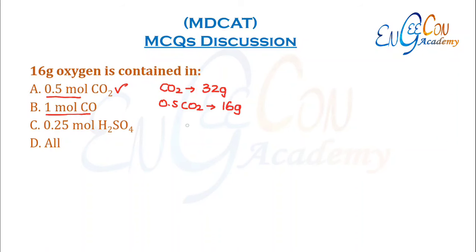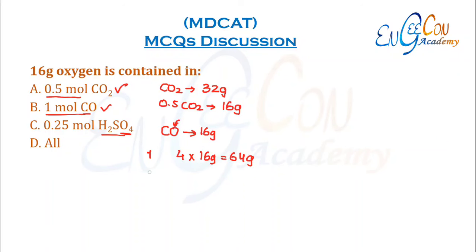1 mole of carbon monoxide contains 1 mole of oxygen, or 16 grams — so this is also correct. For H2SO4, 1 mole has 4 oxygens, or 4 × 16 = 64 grams of oxygen. In 0.25 moles, 0.25 × 64 = 16 grams of oxygen. So in all 3 cases, the same amount of oxygen is present.